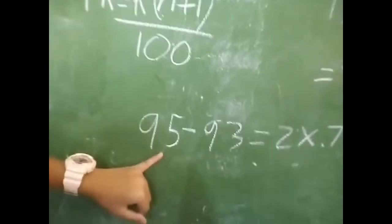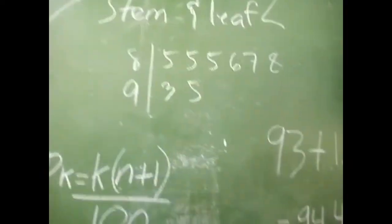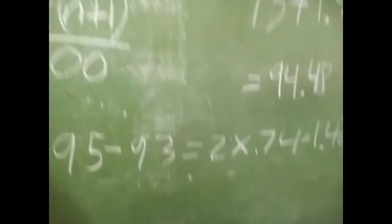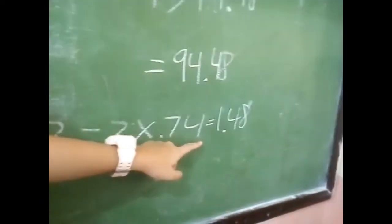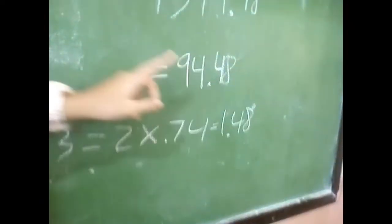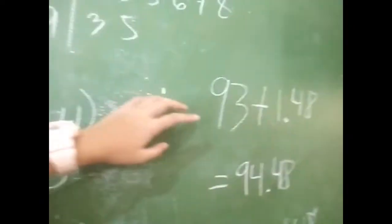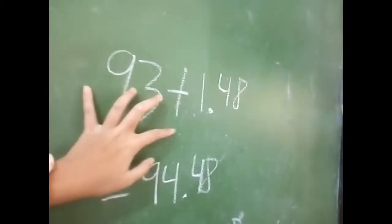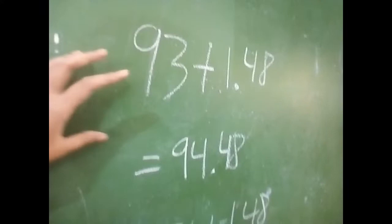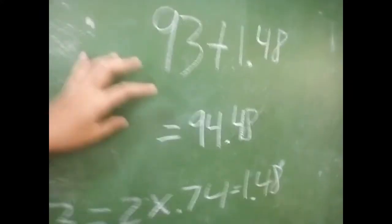So it will be 95 minus 93 equals 2, times 0.74, which gives 1.48. So we have 93 plus 1.48 equals 94.8.